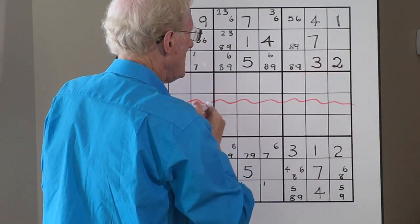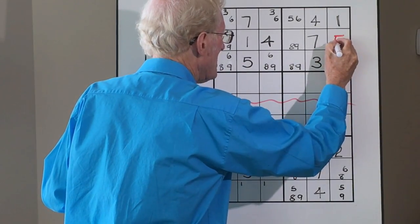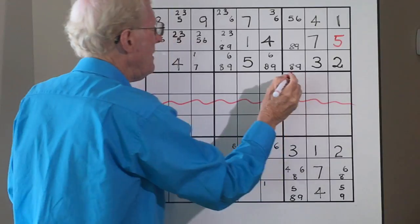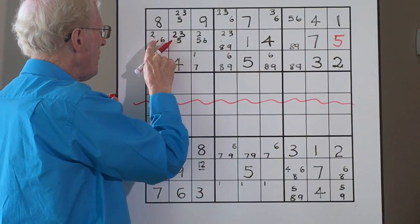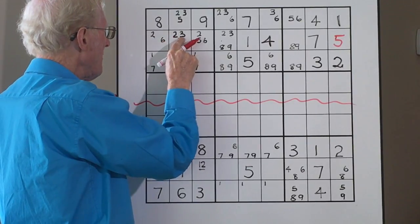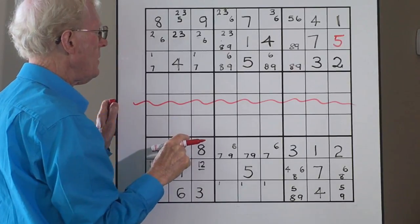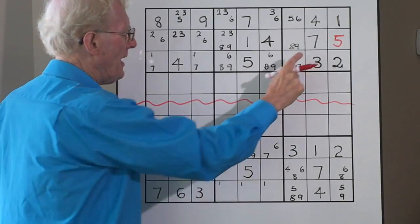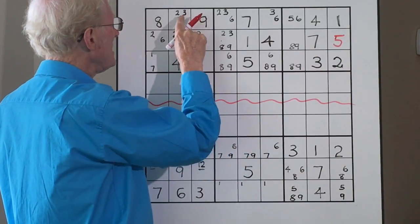Well, what does that do? That makes this a five. So let's get rid of that and let's make it a nice big five. Now because we make that a five, several things are going to happen. First of all, let's just do this row. We can get rid of this five, we can get rid of that five, and we can get rid of that five.